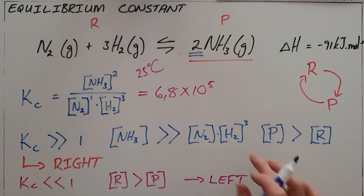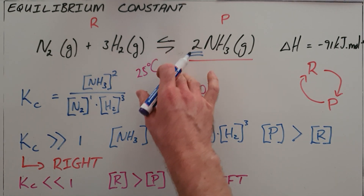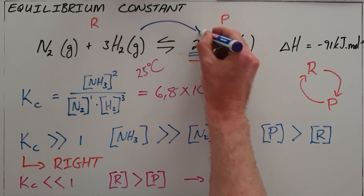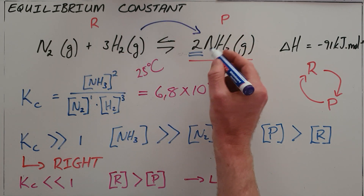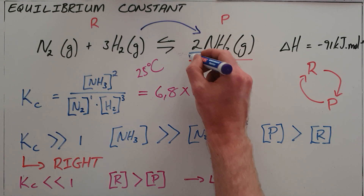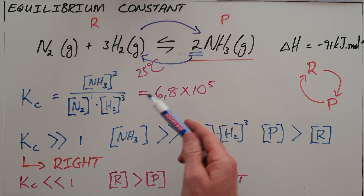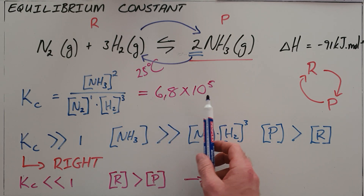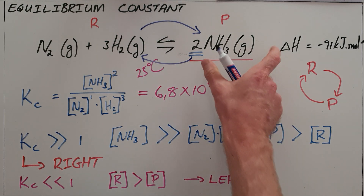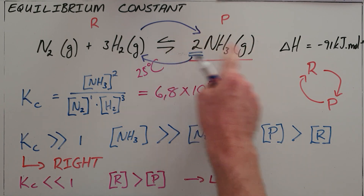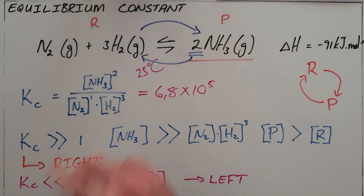Please note that this equilibrium constant is only valid as long as the reaction is at equilibrium, meaning for only as long as reactants are reacting to become products and products are reacting again to become reactants. So when we say equilibrium lies to the right, we are saying there is more ammonia present, but the rate of the forward reaction is still equal to the rate of the reverse reaction.